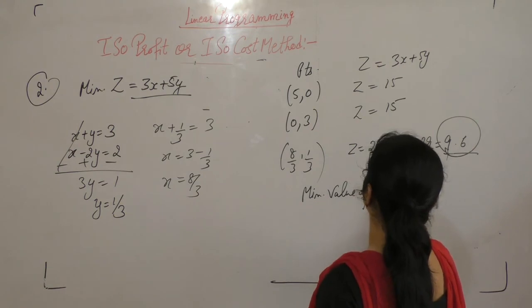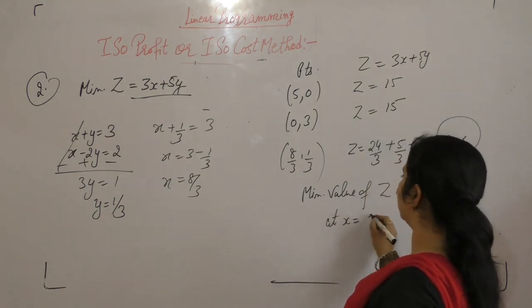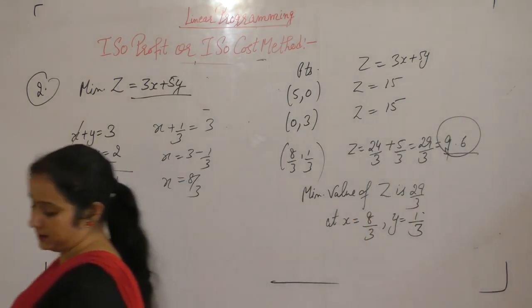Minimum value of Z is 29 by 3, where x equals 8 by 3 and y equals 1 by 3.